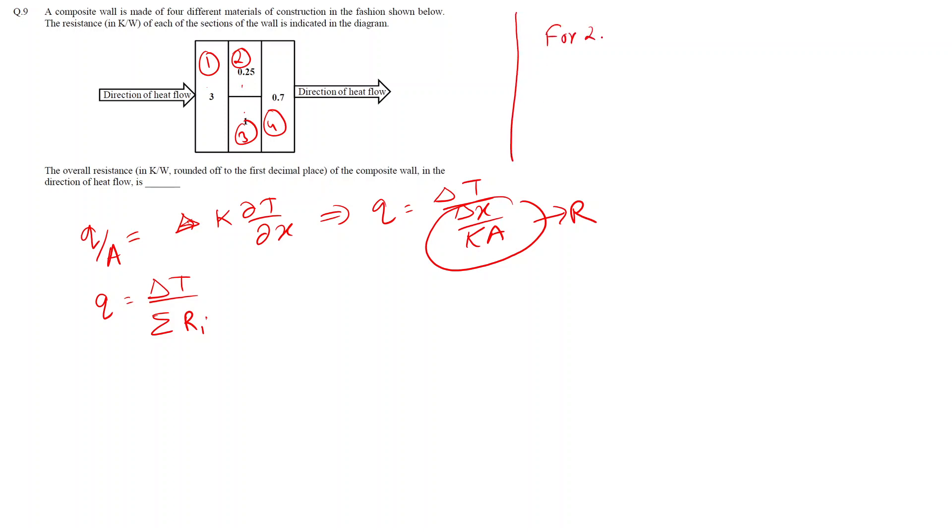We can define the resistance as 1/R₂₃ = 1/R₂ + 1/R₃. We have been given R₂ as 0.25 and R₃ as 1. So this will become 4 + 1 = 5, which implies R₂₃ = 1/5 = 0.2.